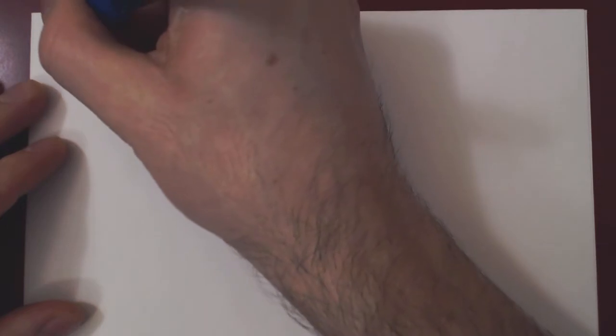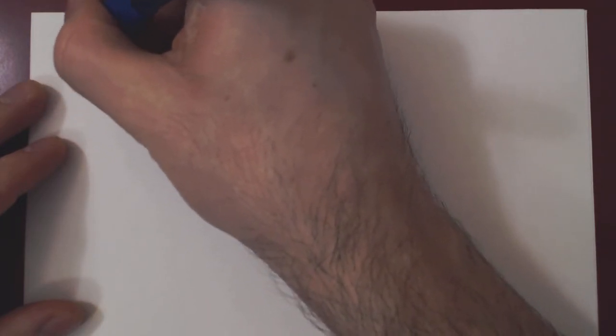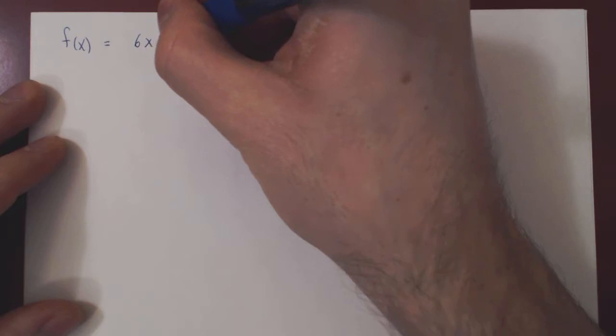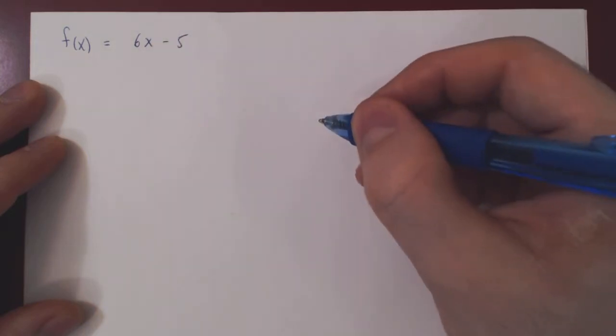In this video, we will look at functions and the idea of a substitution in the argument of the function. Let's start very simply. We'll take a linear function, say f of x is equal to 6x minus 5.